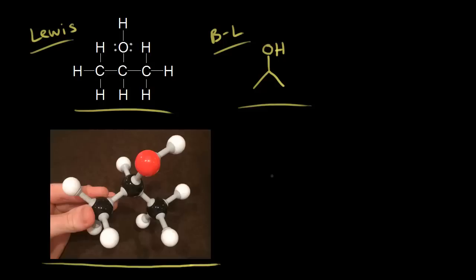We have a flat sheet of paper - how could we represent this picture on our flat sheet of paper? Let's start with the carbon in the center, the carbon in magenta. The carbon in magenta is sp3 hybridized, so we would expect tetrahedral geometry around that carbon.